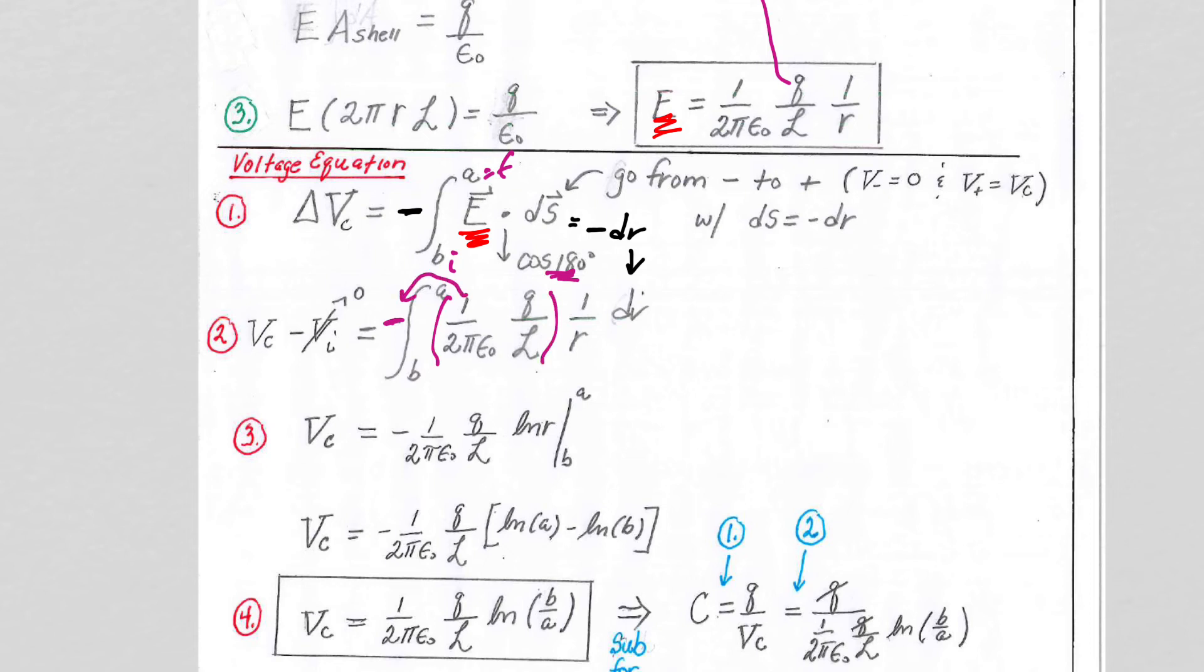So 1/r dr is natural log of r, r final minus initial, but we have our two negatives here. So we have negative distributes through, which makes this a negative and this one becomes a positive, so we get our voltage expression here.